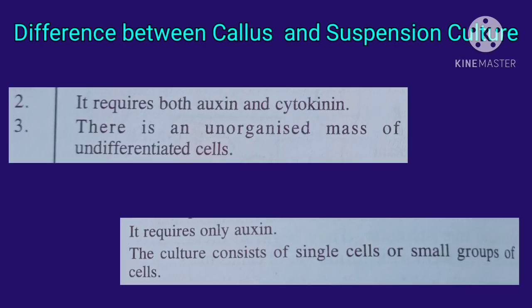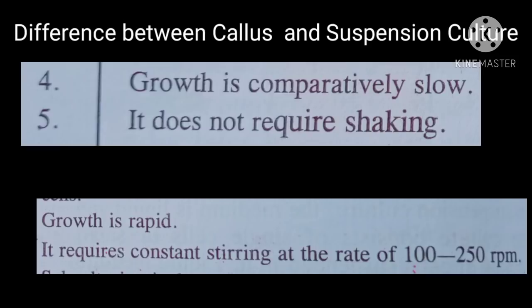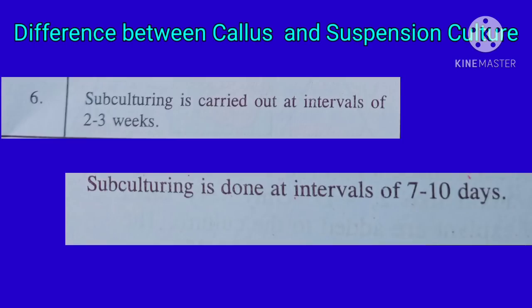In callous culture, both auxin and cytokinin are required, but in suspension culture, it requires only auxin. In callous culture, an unorganized mass of undifferentiated cells (callous) is formed; in suspension culture, it consists of single cells or small groups. Callous culture growth is comparatively slow; suspension culture growth is fast. Callous culture does not require shaking, but suspension culture requires shaking at 100 to 250 RPM. Subculturing is done at intervals of 2 to 3 weeks in callous culture, but at 7 to 10 days in suspension culture.